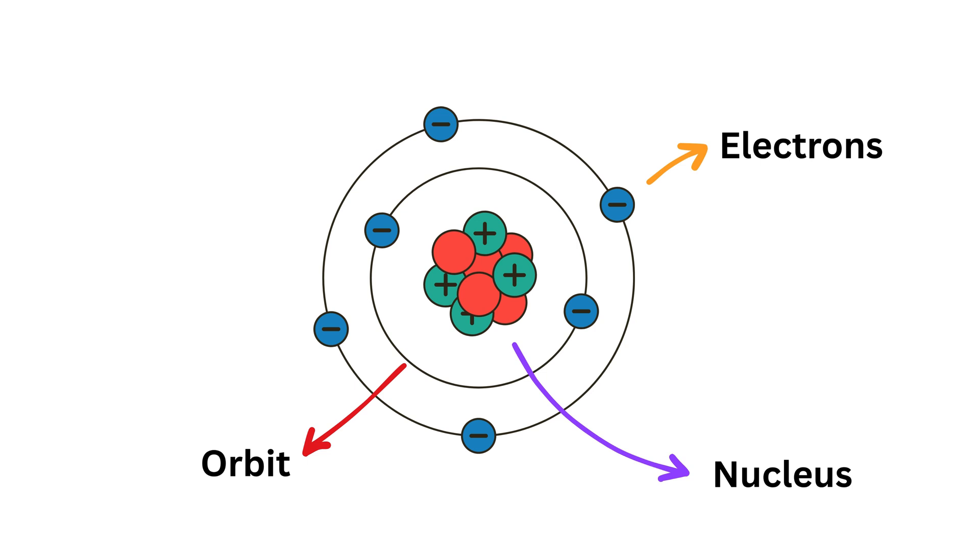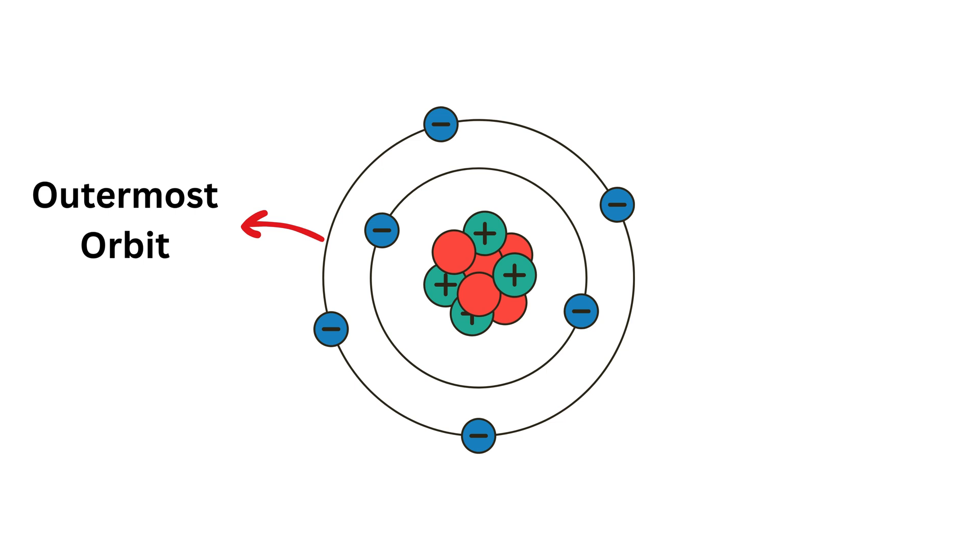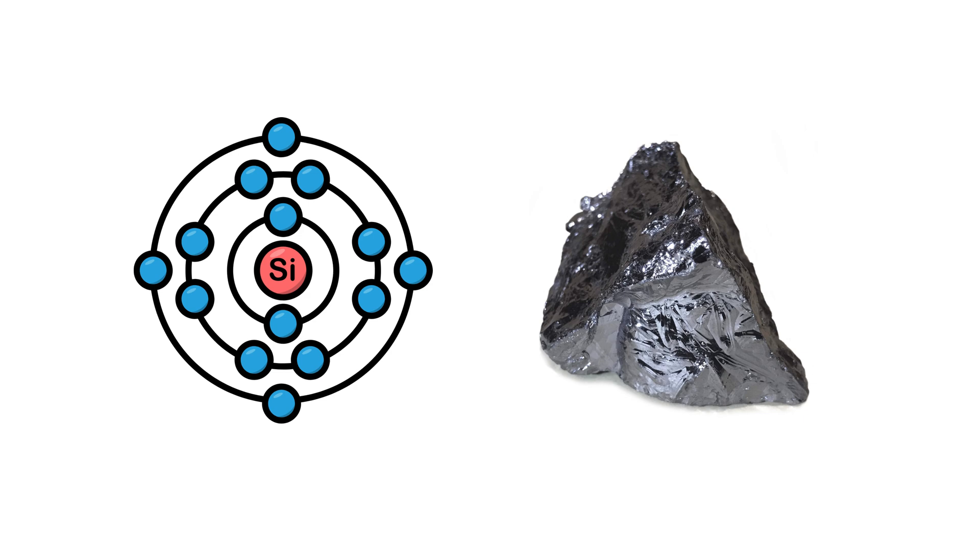Each shell can hold a certain number of electrons depending on the type of atom or element. The outermost shell of an atom is very important—it decides how that atom will behave. The electrons in the outermost shell are called valence electrons. Now let's talk about silicon, the hero of our story.